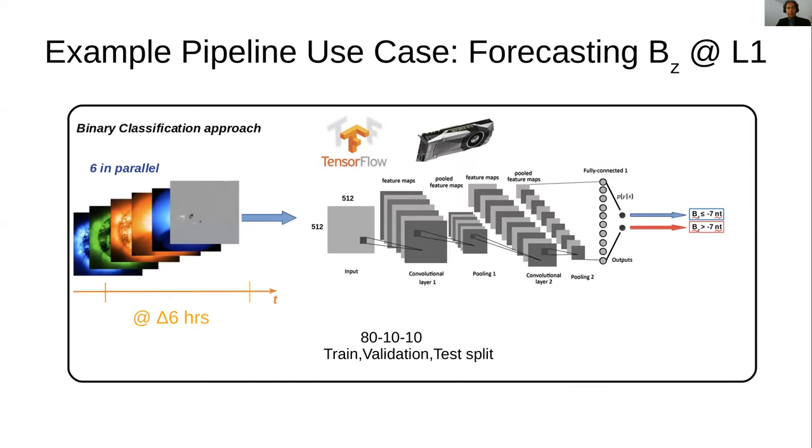As an example of a use case of how our pipeline can be used for space weather, we give an example of forecasting BZ, the north-south component of the interplanetary magnetic fields at Lagrange point one. The user can decide to feed in six of these image products in parallel at a time window of six hours. This goes into a deep CNN network, which is cast as a binary classification problem. It classifies whether the predicted BZ value, three to five days ahead of when the images were taken, is above or below a certain threshold. In this case, it's negative seven nano Tesla.